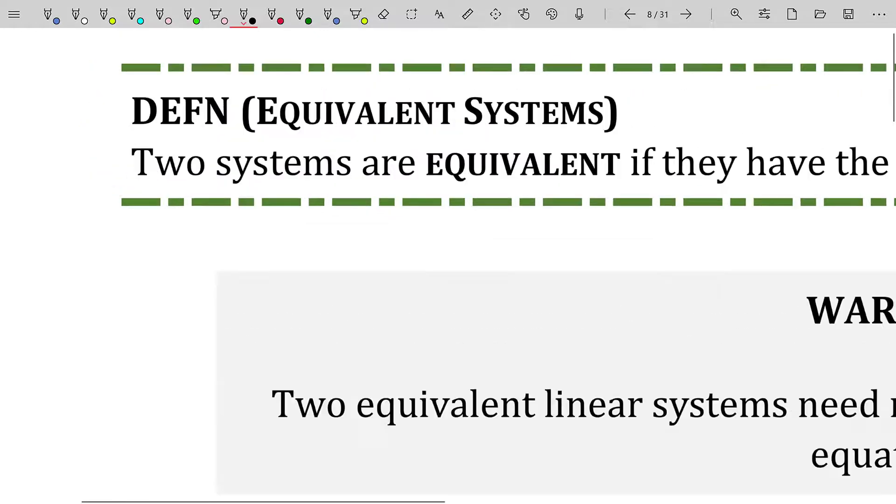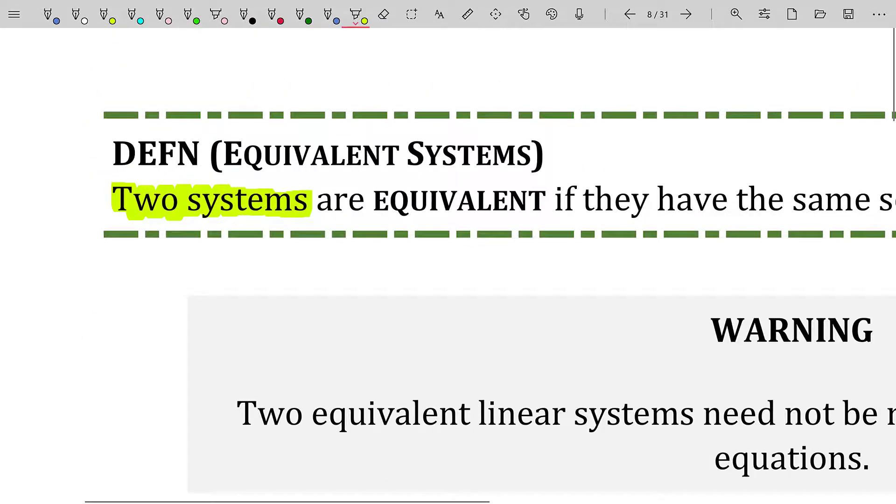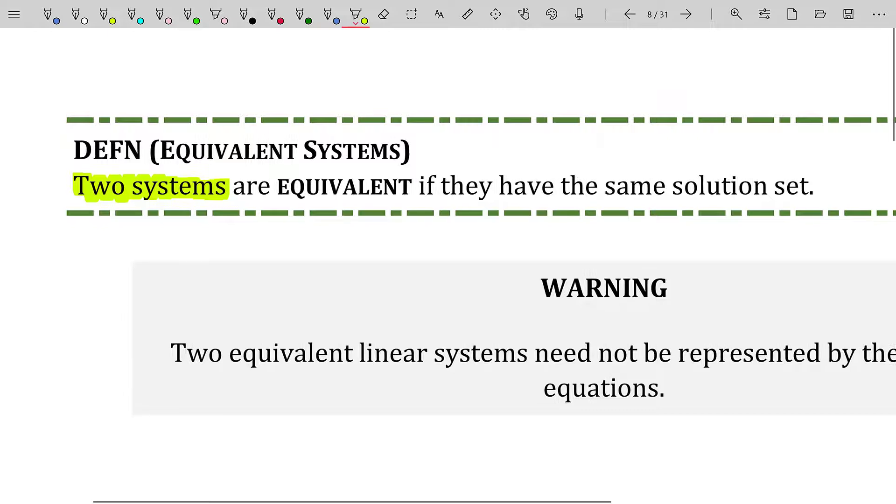So we're given two systems, and we're told that they are equivalent if they have the same solution set. Now we know from our prerequisite algebra that if you have, and I'm just going to keep this very simple, a two by two system that is graphically represented by two lines.